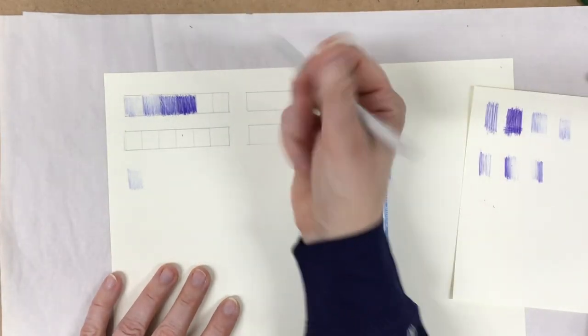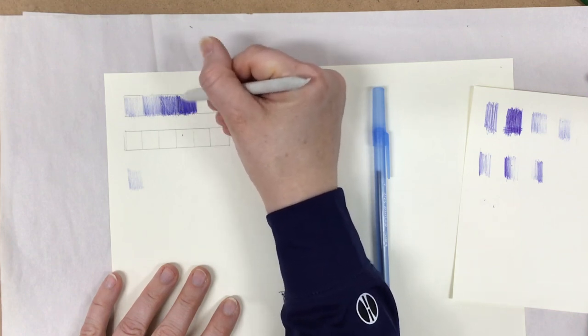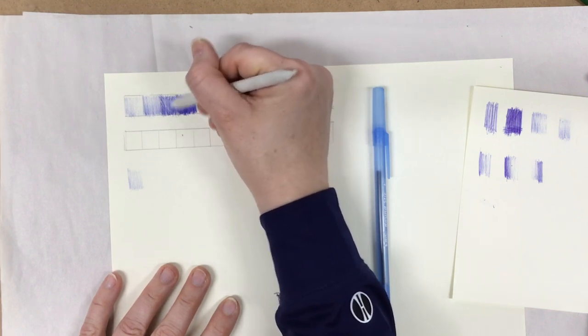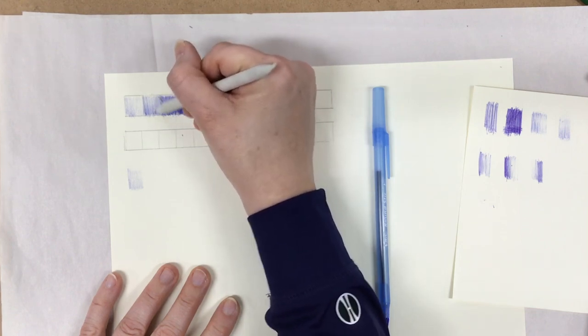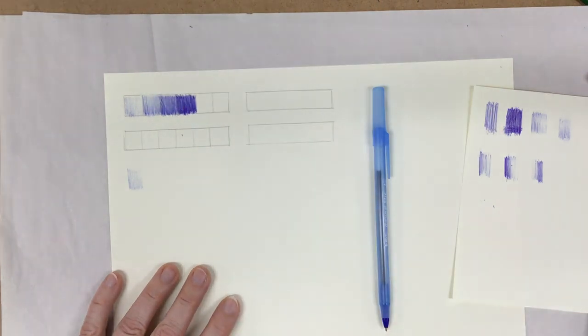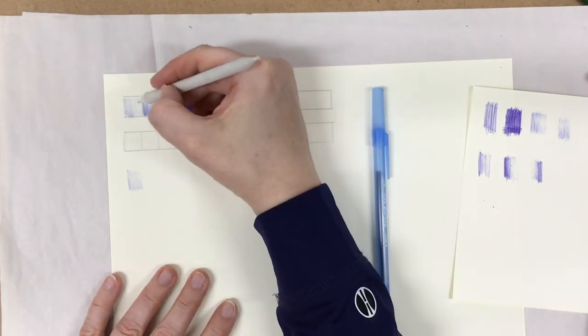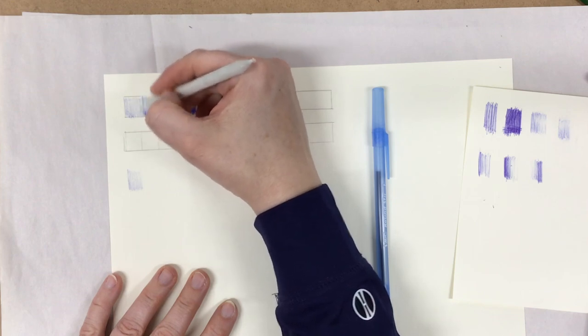All right. I could also maybe grab my blending stump to kind of even out some of the value, make it look a little bit smoother. All right. I'm not going to do this last one, or maybe I'll just do a little bit over here. So it's a little bit more even.